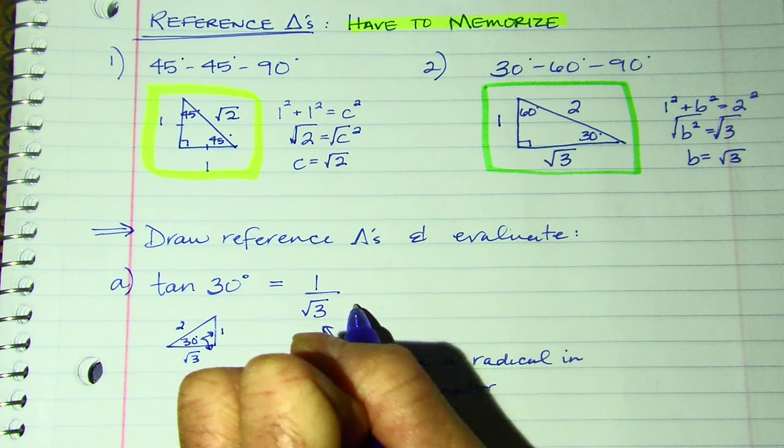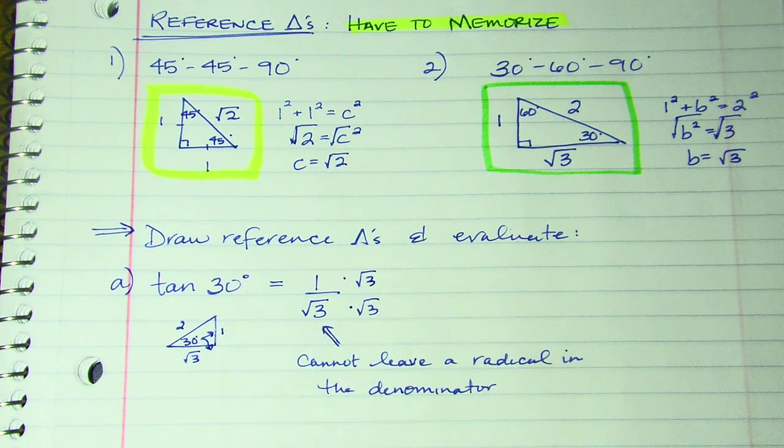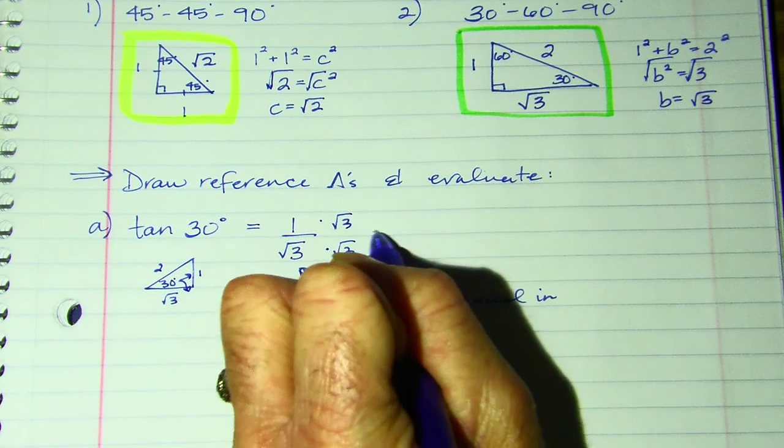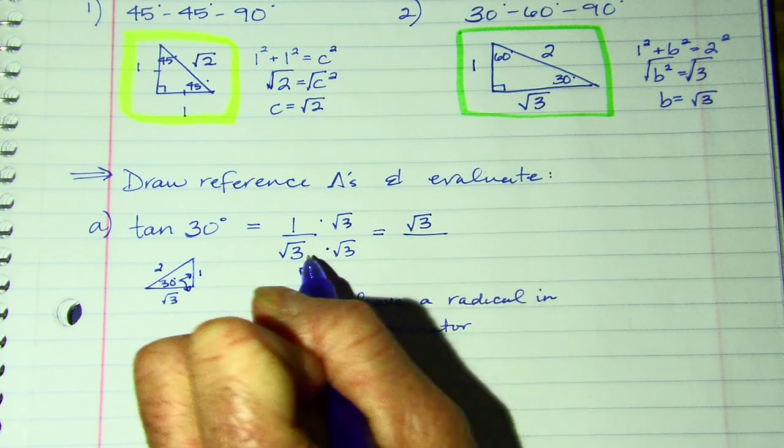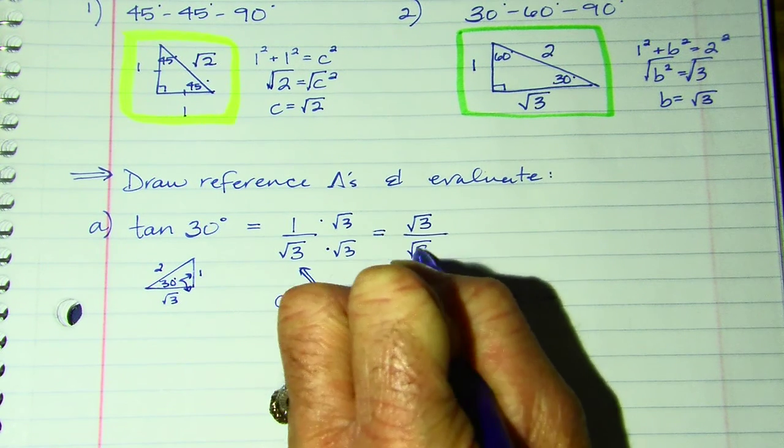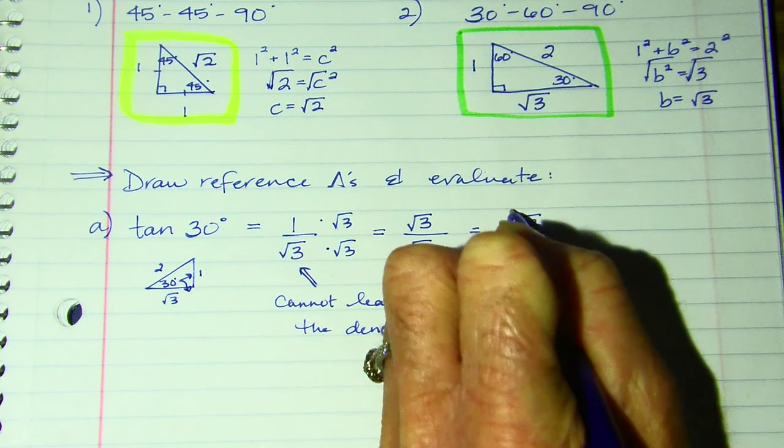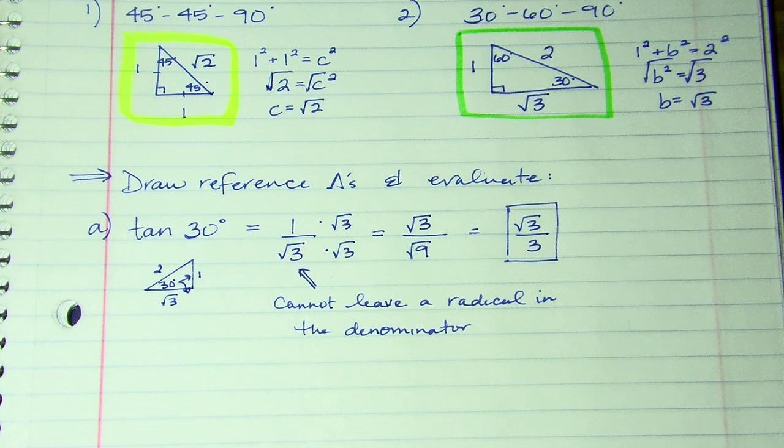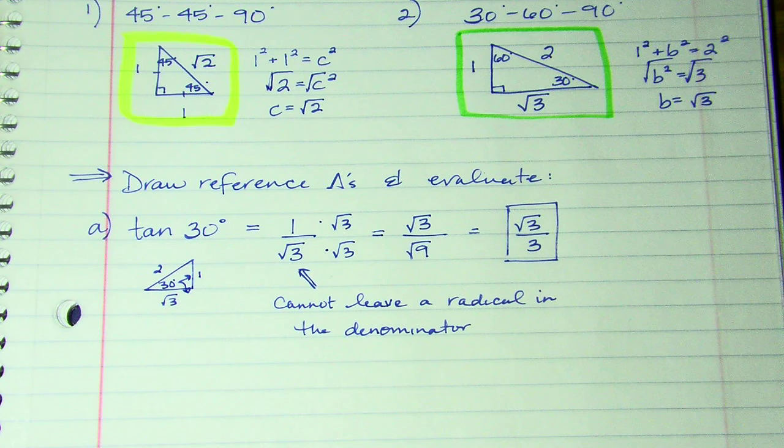Now, you cannot leave a radical in the denominator. So I have to multiply top and bottom by the square root of 3. And that process is called rationalizing a denominator. So this gives me 1 times root 3 is root 3. Root 3 times root 3 is root 9. So this gives me root 3 over 3. I do not want your answer in decimals. It needs to be using our reference triangle and keeping it in the radical form.